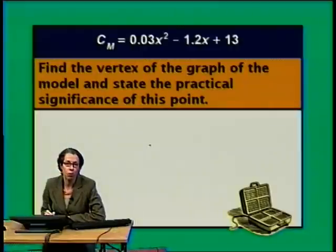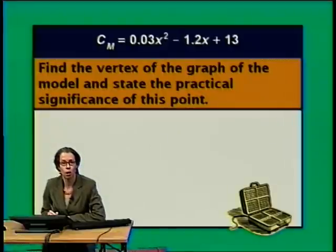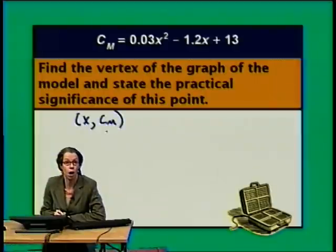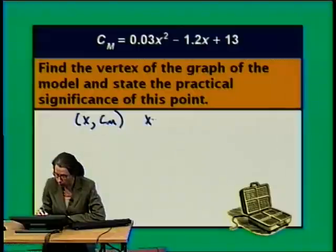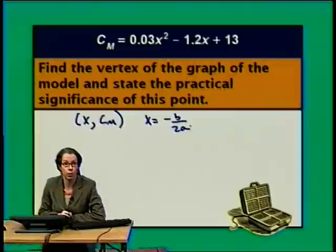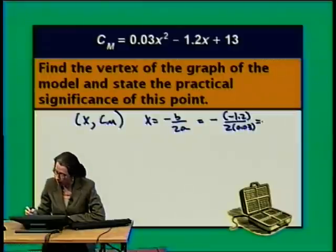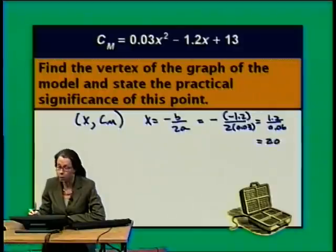Here's another question: we're asked to find the vertex of the graph of this model and state the practical significance. The first coordinate of the vertex is X, found by evaluating negative B over 2A. In this case, B is negative 1.2 and A is 0.03. So that's the opposite of negative 1.2 over 2 times 0.03, which is 1.2 over 0.06, and this turns out to be 20.